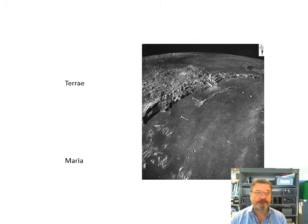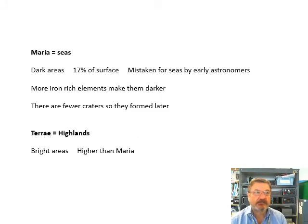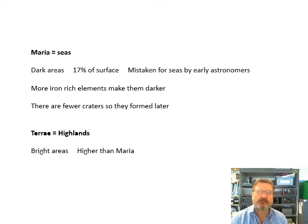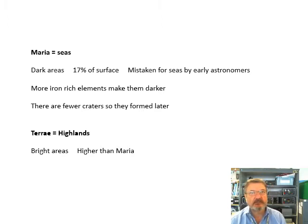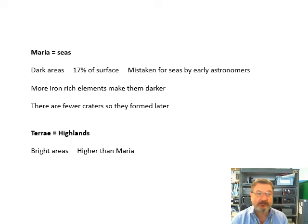Why are they different? The maria — the seas — are the dark bits, about 17% of the surface. Astronomers a long time ago thought they were seas. Why are they darker? Because the elements in them contain more iron, which makes them darker. There are also fewer craters in the maria because they formed later — they were molten for longer, cooled down later, and there's been less time for things to smack into them. The terre are brighter and higher up than the maria.